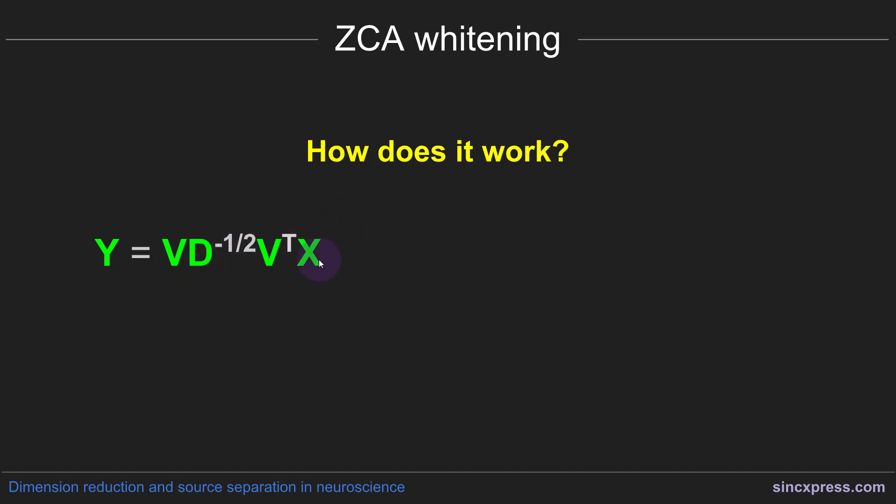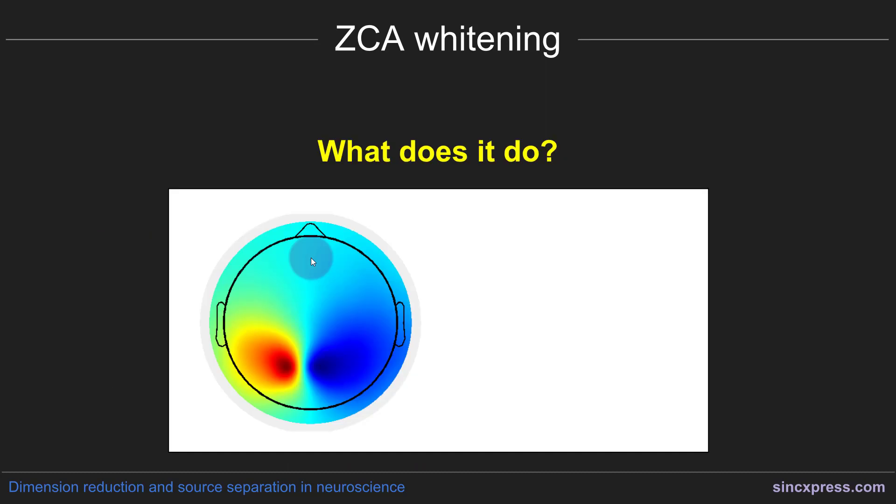This eigendecomposition that results in the eigenvectors and eigenvalues matrix that doesn't necessarily need to come from the entire dataset of X. You can actually use just a subset, one-time window, within X to compute the eigenvectors and eigenvalues, and then you can apply those whitening vectors to the entire dataset of X. So now let me go back here.